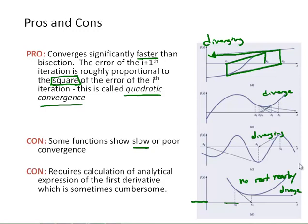Recall for bisection, as long as that root lies in between the initial bracket, the bisection method is going to converge on it.